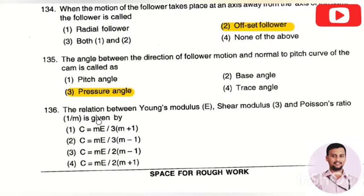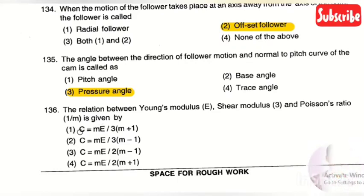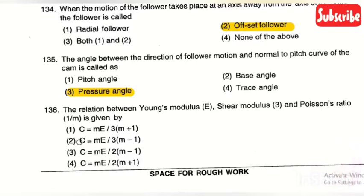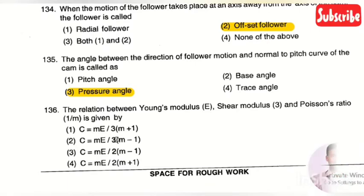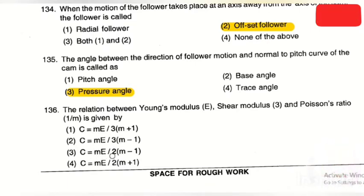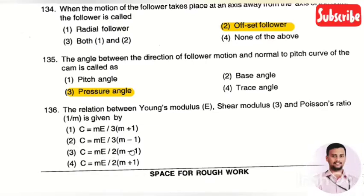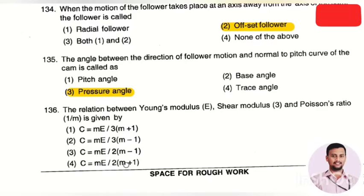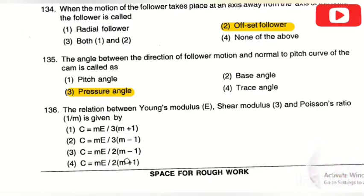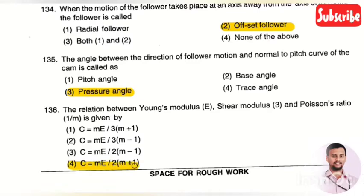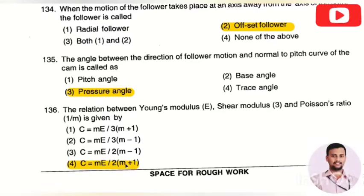The next question: the relation between Young's modulus E, shear modulus C, and Poisson's ratio 1/m is given by — option 1: C = mE/(3m+1), option 2: C = mE/(3m−1), option 3: C = mE/(2m−1), option 4: C = mE / [2(m+1)]. The right answer is option 4, that is C = mE / [2(m+1)].